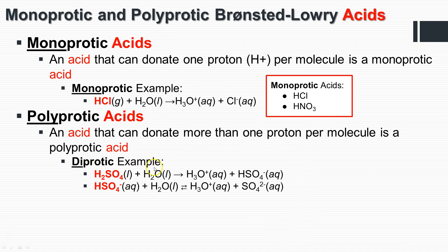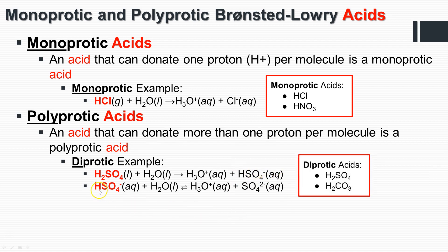H2SO4 is a diprotic example. It partially dissociates — one proton goes to make a hydronium cation and we're left with HSO4 as the anion. This can further dissociate, creating yet another hydronium cation and the sulfate anion. So H2SO4 is diprotic, just like carbonic acid — it donates two protons.